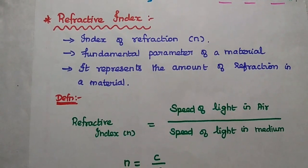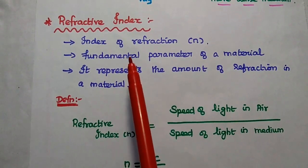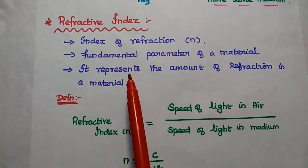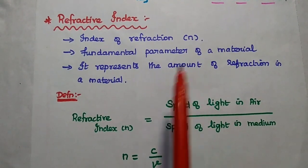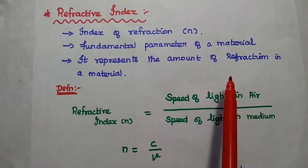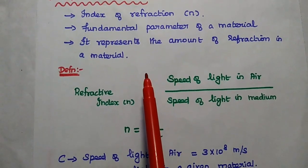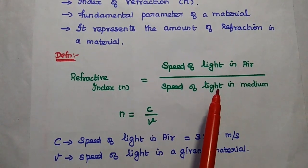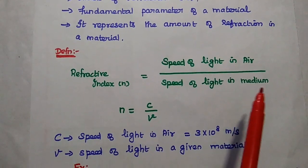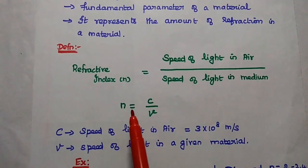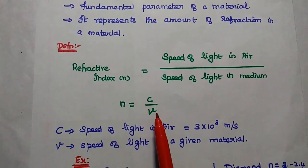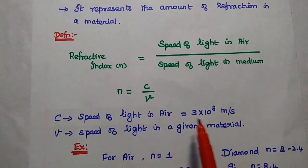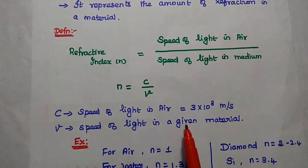The next one is refractive index. It is also called the index of refraction, and it is denoted as small n. It is the fundamental optical parameter of a material. It represents the amount of refraction in a material. It can be defined as the ratio of the speed of light in air to the speed of light in a particular medium or material. It is denoted as n, equal to c by v, where c is the speed of light — 3 into 10 to the power 8 meter per second — and v is the speed of light in a given material.